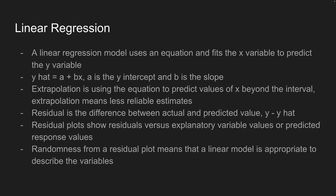A linear regression model uses an equation to fit the x variable to predict y. For example, y-hat equals a plus bx, where a is the y-intercept and b is the slope. Extrapolation is using the equation to predict a value of x outside the observed interval, leading to less reliable estimates. The residual is the difference between the actual and predicted value — y minus y-hat. Residual plots show the residual versus the explanatory variable values. If there is randomness in the residual plot, a linear model is appropriate; if there's a pattern like a U-shape, it is not.